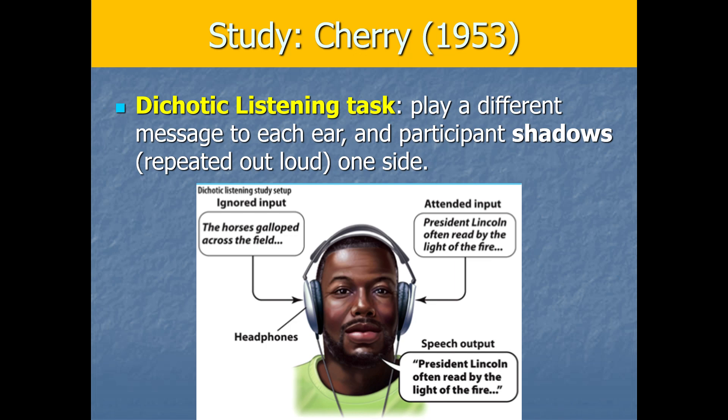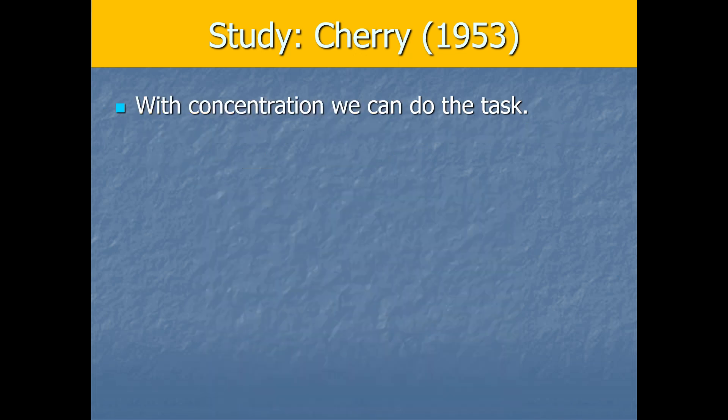In the example here, the guy's right ear hears 'the horse has galloped across the field,' while at the same time the left ear hears 'President Lincoln often read by the light of the fire,' and he has to say out loud whatever he hears in one stream. That's a dichotic listening task, used a lot for auditory research. It takes some concentration, just like staying focused on one conversation at a party. But people can do this task. When you ask afterward what was said in the unattended channel, we've generally got no idea because we weren't attending to it.